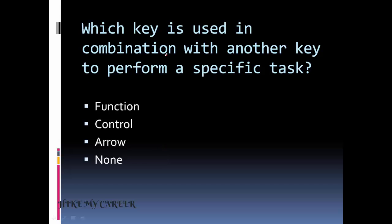Next question. Which key is used in combination with another key to perform a specific task? Option 1: Function. Option 2: Control. Option 3: Arrow. Option 4: None. Answer is Control. Control is used in combination with another key to perform a specific task. For example, Control plus A is used to select the old document. So Control key is used in combination with another key to perform a specific task.